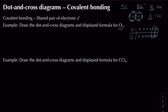Since one shared pair only gives 7 electrons per oxygen, I can form another shared pair, giving each oxygen 8 electrons total — 6 of its own and 2 from sharing. So when I draw the Venn diagram I end up with a dot and a cross, dot and a cross for the shared pairs for each oxygen, giving a double bond.